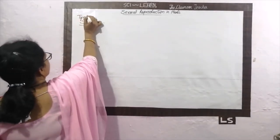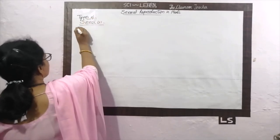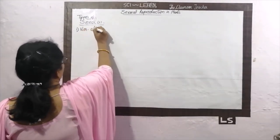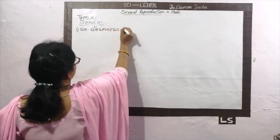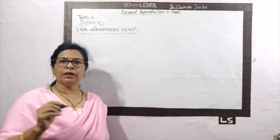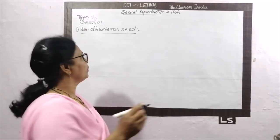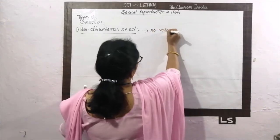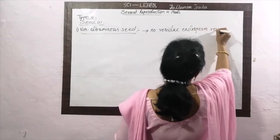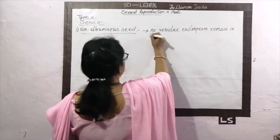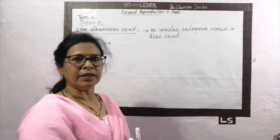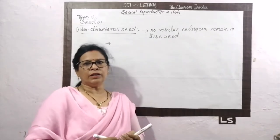Let's look at the types of seeds. The first type is called non-albuminous seed. Non-albuminous seeds contain no residual endosperm — no residue endosperm remains in these seeds. It means these seeds utilize all the reserved food present in them; it is completely consumed during embryonic development.